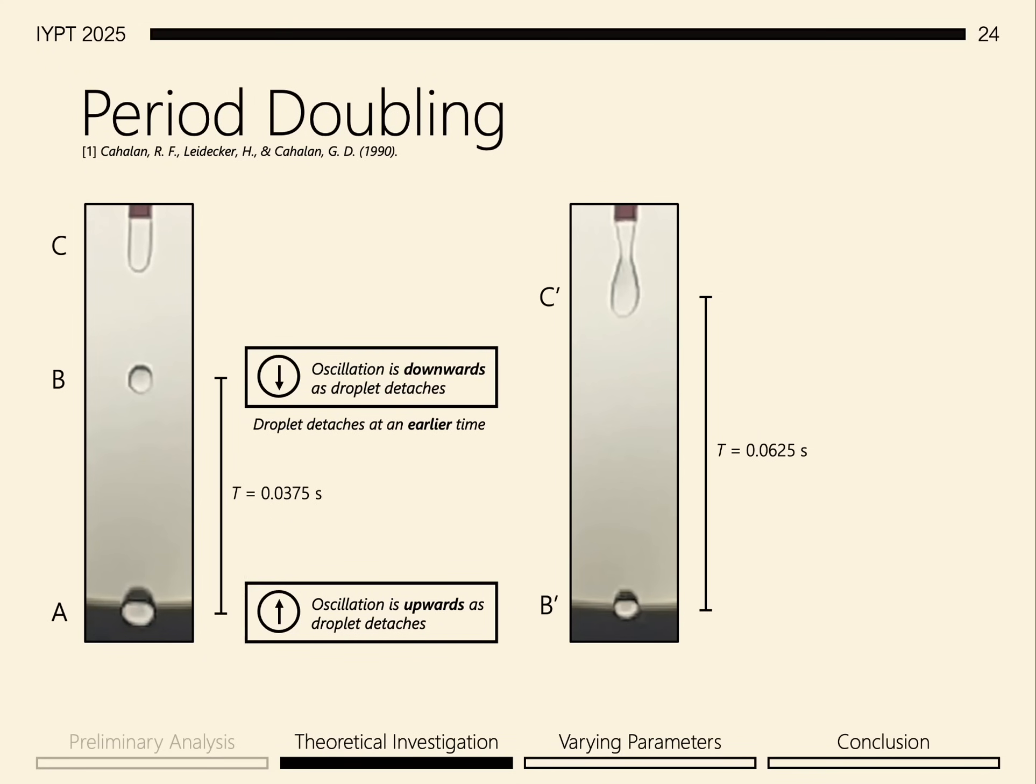For droplet A that comes before it, the oscillation is in its upwards phase as the droplet detaches, so the droplet falls at a delayed time. The opposite occurs for droplet C, where the oscillation is going upwards when the droplet detaches, and the drop is delayed.